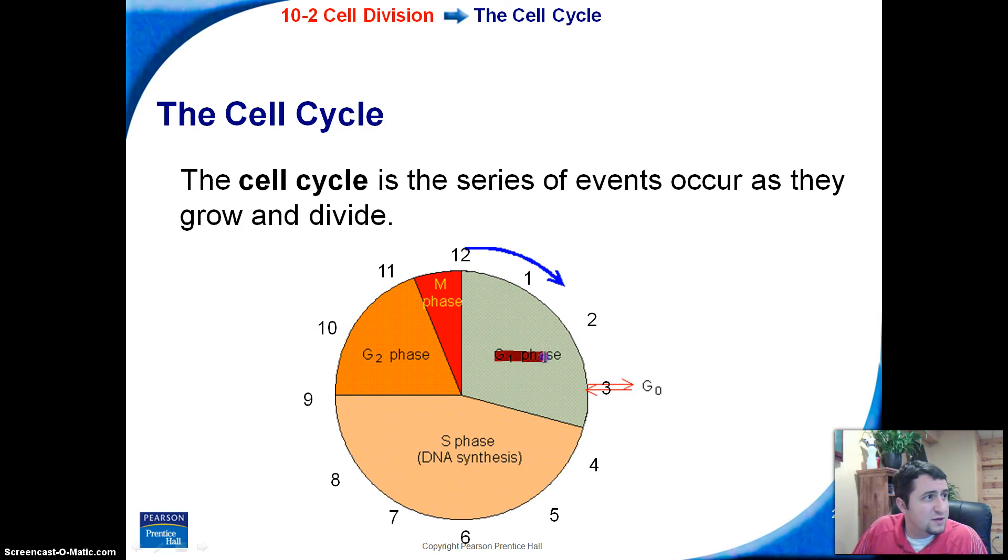You can see here that we have a series of events that occur all along the way. We've got the G1 phase, the S phase, the G2 phase, and then the M phase. So let's go ahead and explore those in a little bit more detail.